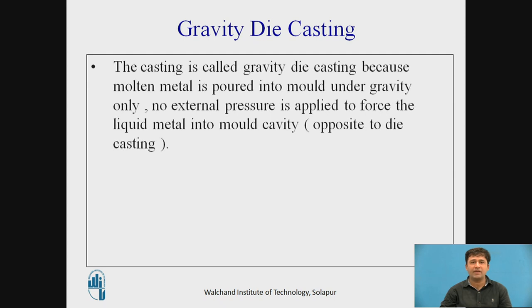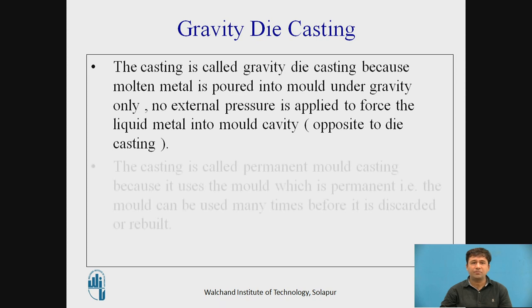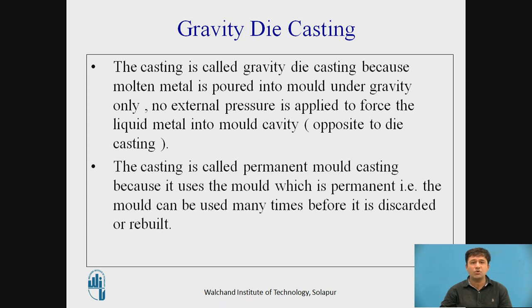Now we will come to Gravity Die Casting, our main topic. The casting is called Gravity Die Casting because molten metal is poured into the mold under gravity only — no external force is applied to the liquid metal into the mold cavity. It is also called Permanent Mold Casting because the mold is permanent; that is, the mold can be used many times before it is discarded or rebuilt.